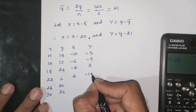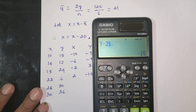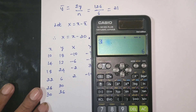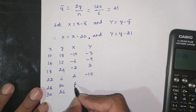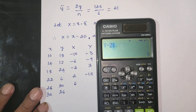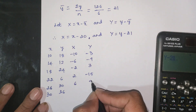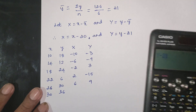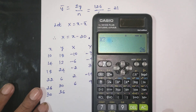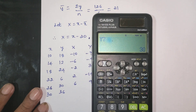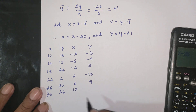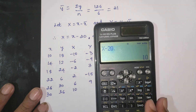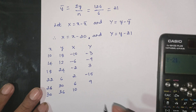For x value 26, y value 36: X = 6, Y = 9. For x value 30, y value 36: X = 10, Y = 15.